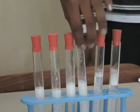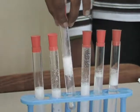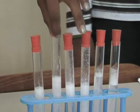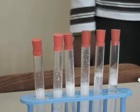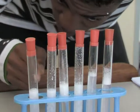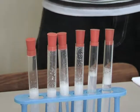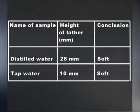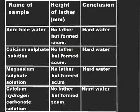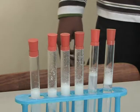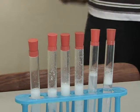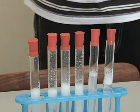What else did you observe? The samples of borehole water, calcium sulfate solution, magnesium sulfate solution, and calcium hydrogen carbonate solution did not form lather but scum. If you look closely at the surface of these samples, you can see white scum forming. So I think these solutions are all examples of hard water. That's an excellent conclusion. The hardness of water is caused by dissolved calcium and magnesium ions. The scum forms because the calcium and magnesium compounds react with soap, giving an insoluble product that floats on the water.